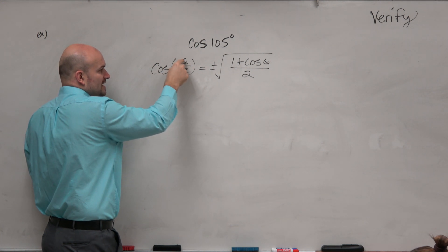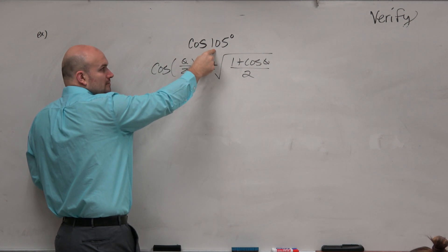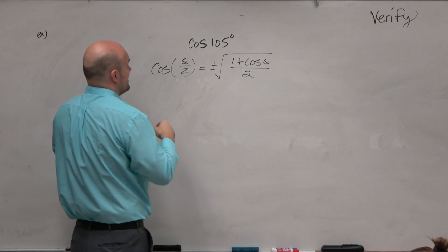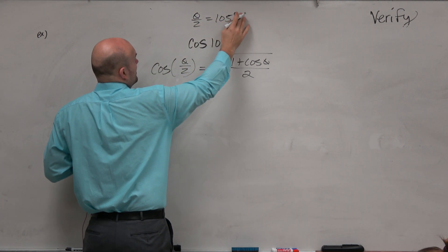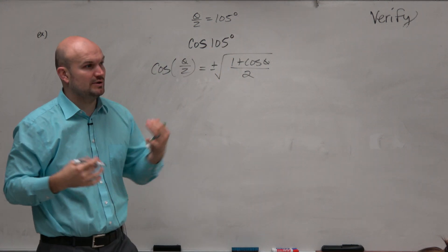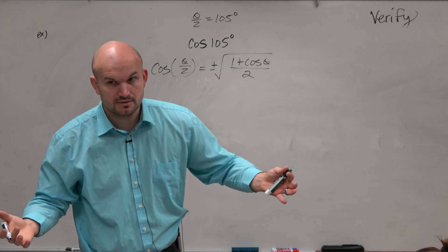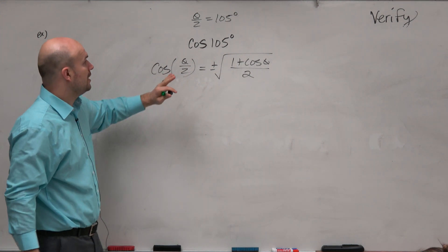Now, cosine of theta over 2 is our 105. So is it OK for us now to say that for our equation, we're going to let theta divided by 2 equals 105 degrees? Is everybody OK with that if we're going to use this formula?